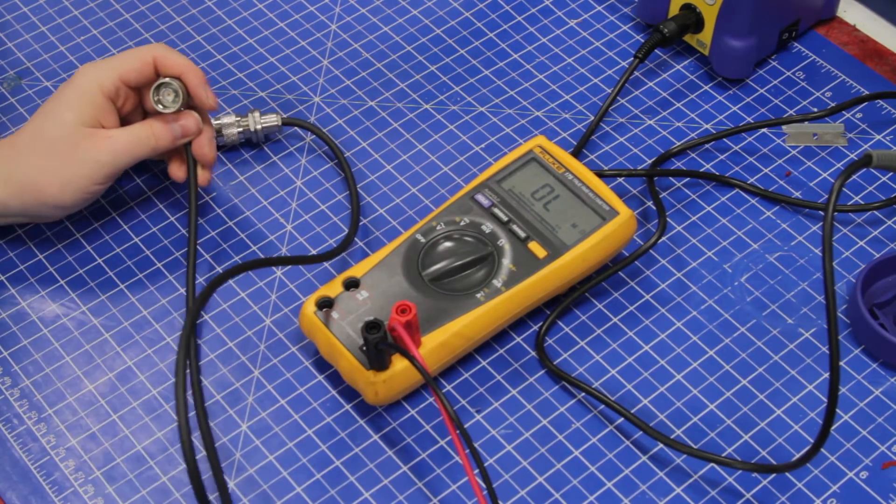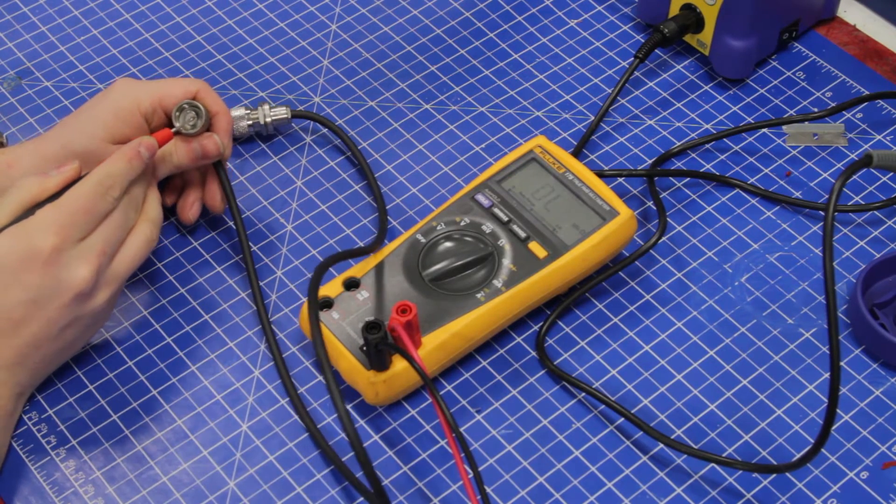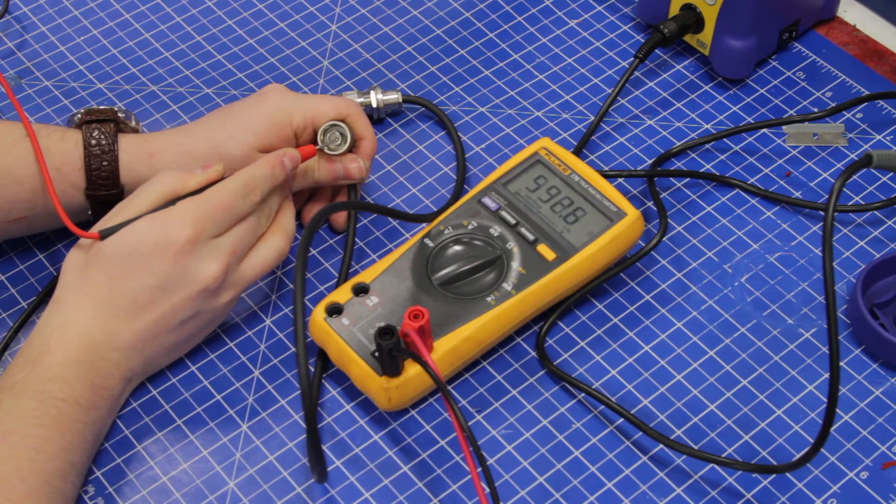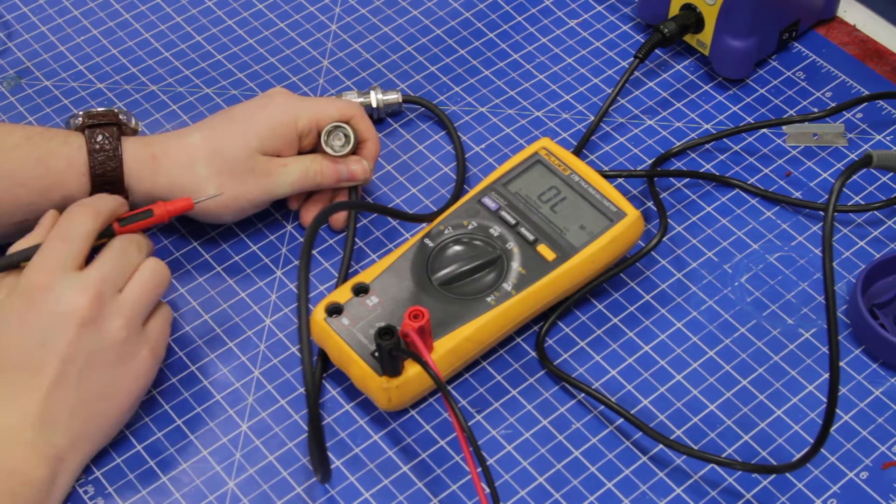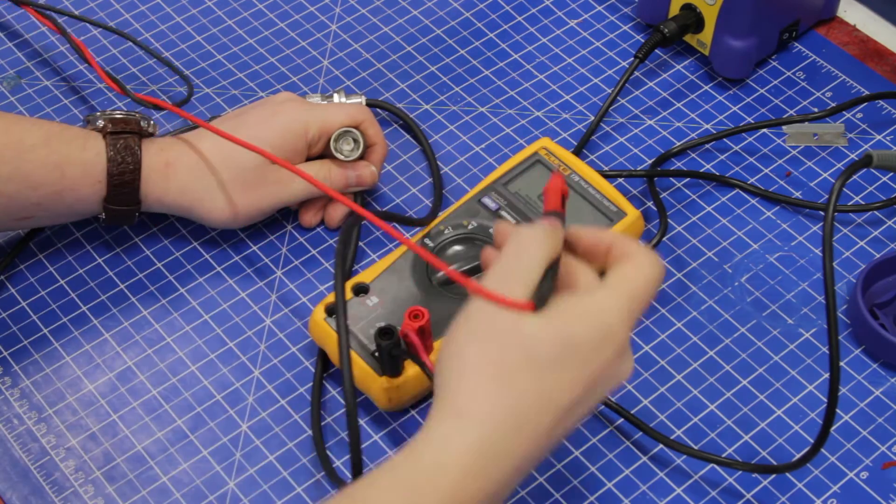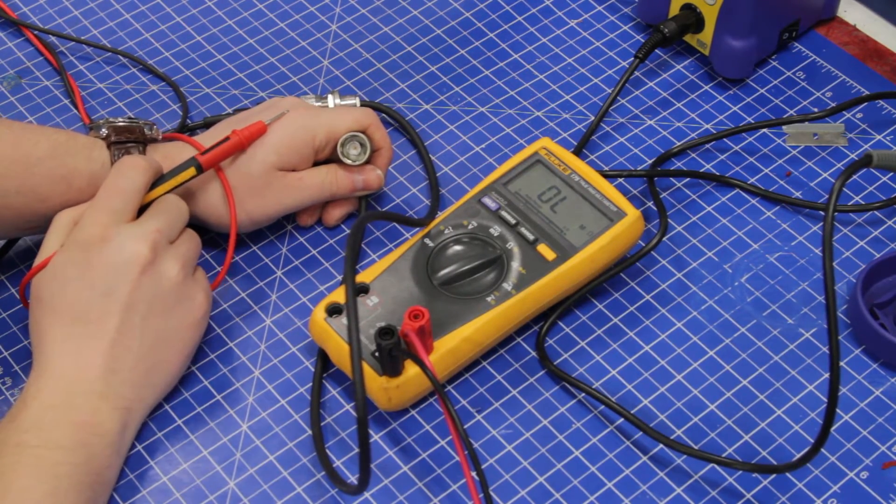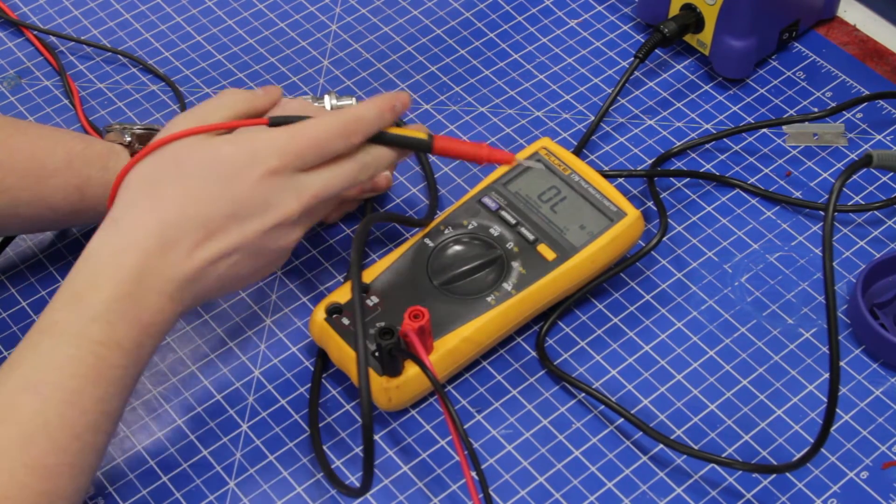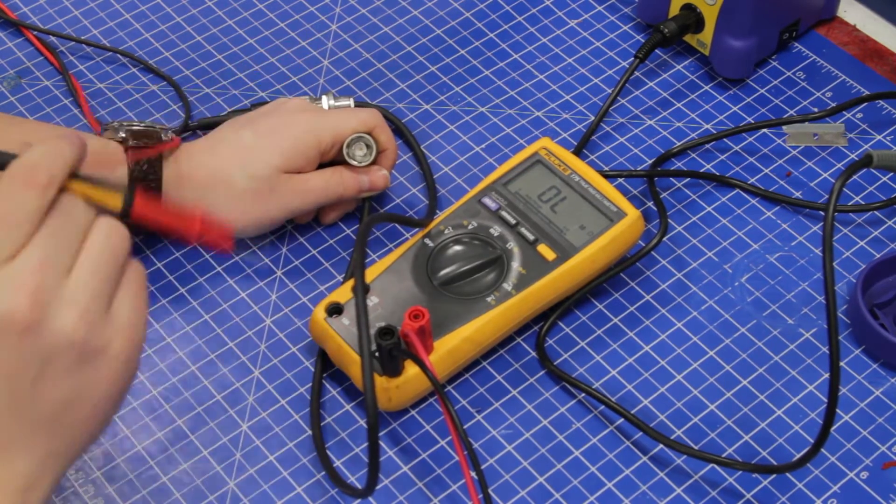But what if it wasn't okay? Well if you short out this center pin you can get a bit of resistance. And you can see it drops almost to zero because it's a direct short. And what you want to see without anything connected to the other end of the connector with this sort of setup is a complete open circuit, overload.